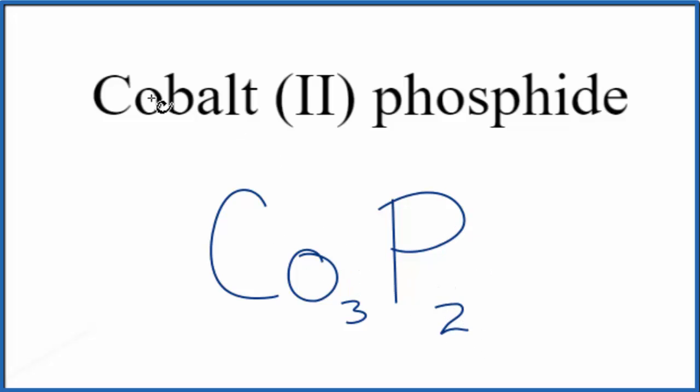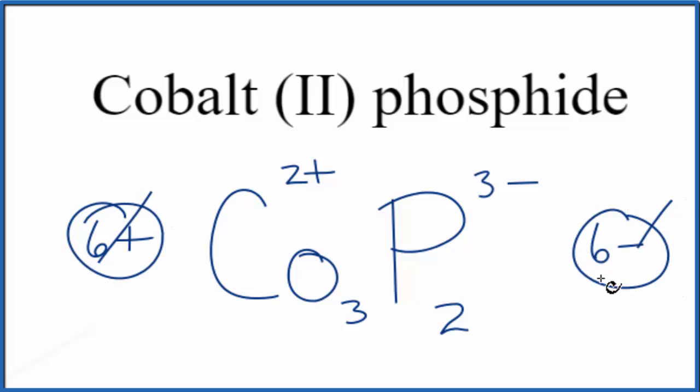Let's check our work though. We said cobalt, that was going to be 2+. We looked up phosphorus, 3-. 3 times 2+, that's 6+. 2 times 3-, that's 6-. Add these two up, you get zero. Net charge is zero. So this is the correct formula for cobalt (II) phosphide.